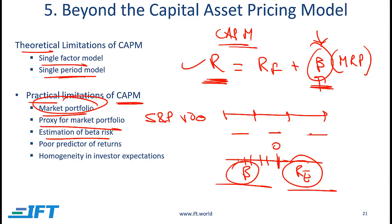The other issue has to do with how beta is calculated. Different analysts might use different time periods — some might use daily returns, others weekly, others monthly. So depending on how an analyst calculates beta, they will come up with different numbers, meaning the expected return will also be different.